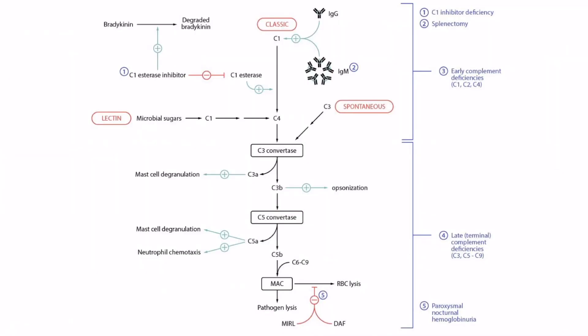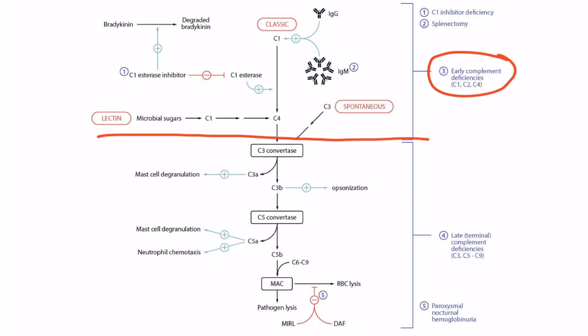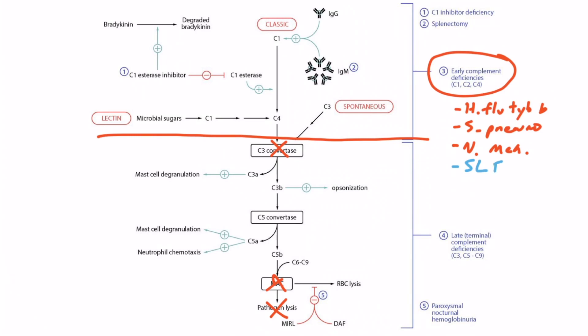On the diagram, early complement deficiencies refer generically to the complement pathway prior to the formation of C3 convertase — everything from that point and above. If you can't form C3 convertase, you don't get MAC and can't kill encapsulated organisms, leading to recurrent infections with H. flu type B, Strep pneumoniae, and Neisseria meningitidis. These early complement proteins are also needed to clear immune complexes, and without that ability, patients can get lupus.